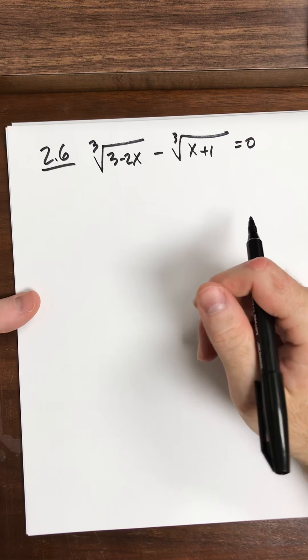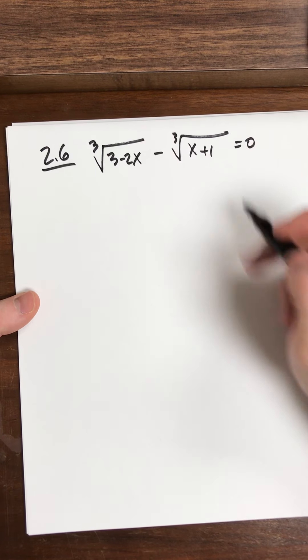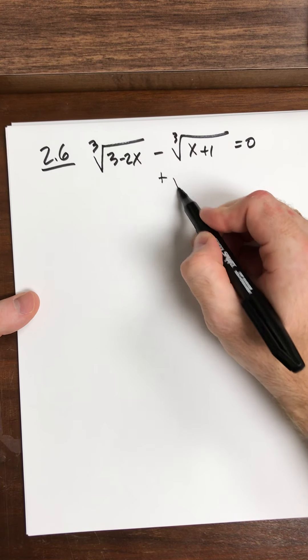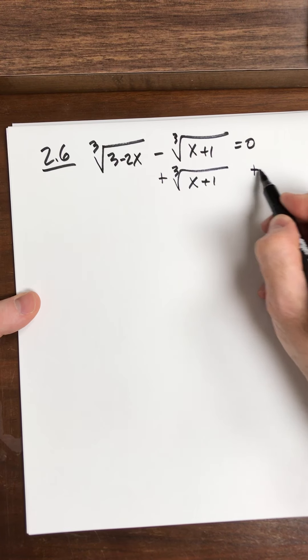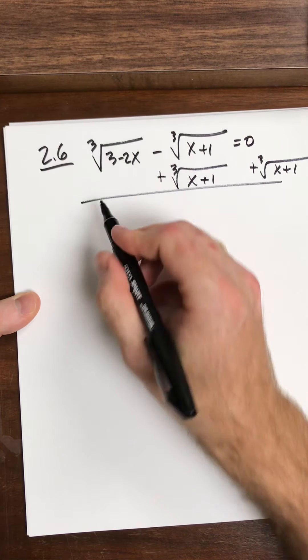So this one, we've got two radicals, so to isolate them, what we need to do is move one to the other side, so that's what I'm going to do. If I move one to the other side, then it looks something like this.